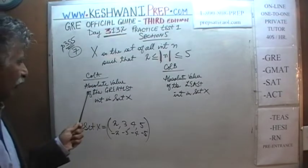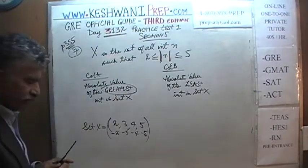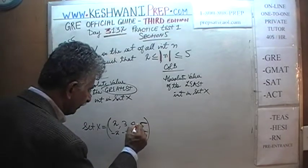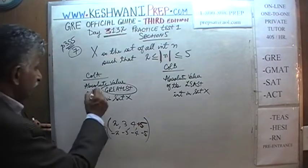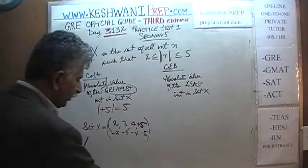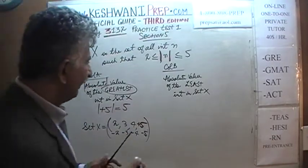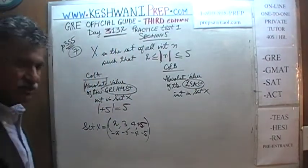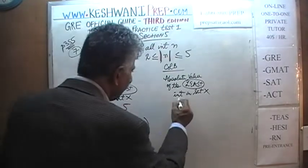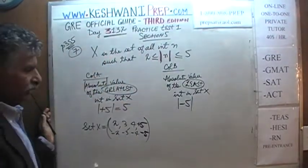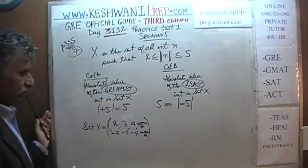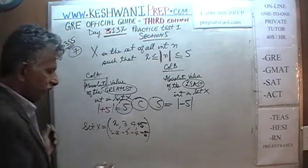Column A asks for the absolute value of the greatest integer in set X. The greatest integer in set X is positive 5, and the absolute value of positive 5 is just 5. Column B asks for the absolute value of the least integer in set X. The least integer is negative 5, and the absolute value of negative 5 is also 5. So both columns equal 5 — they are equal. The answer is C.